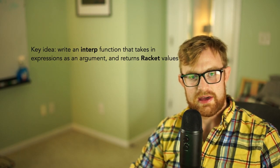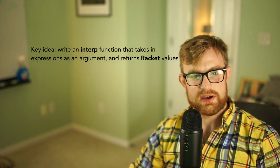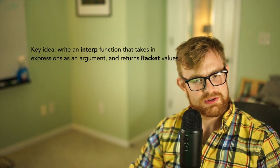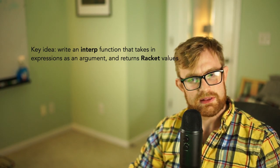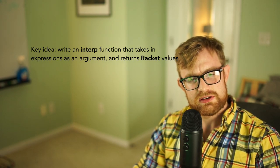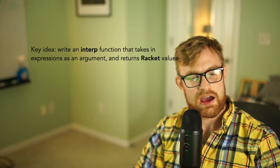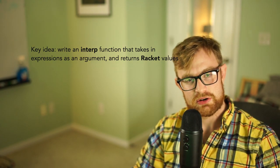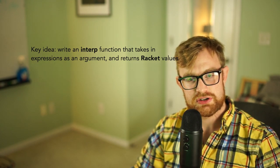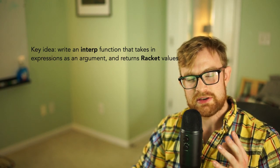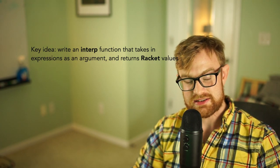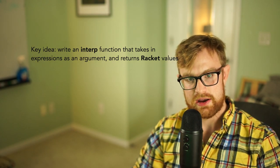So how are we going to build a programming language? We're going to teach you many different ways, with different trade-offs in complexity, implementation, speed, and ability to rapidly prototype. Today I'm going to teach you the simplest way I know, which is called metacircular interpretation. The key idea is that you write a Racket function named interp — its job is to take an expression in the language you want to define, interpret it, and give you a Racket value as its result.